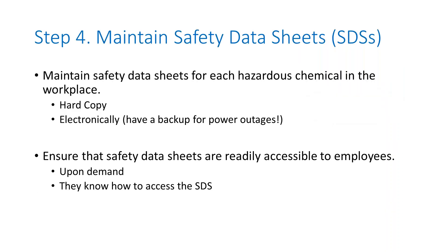The next step is to maintain your safety data sheets. Safety data sheets are the source of detailed information on a particular hazardous chemical. Employers must maintain copies of SDS for all hazardous chemicals present in the workplace. If you do not receive an SDS from your supplier automatically, you must request one. You must also ensure that SDS are readily available to workers when they are in their work areas during their work shifts. Some employers keep the SDSs in a binder in a central location — in the safety office, on a construction site, or in the manager's office.